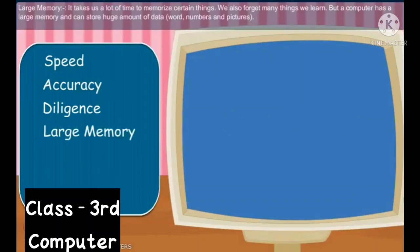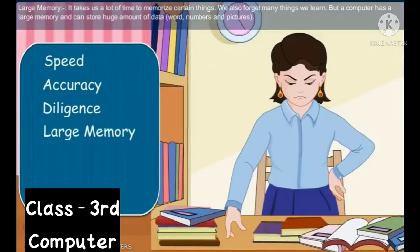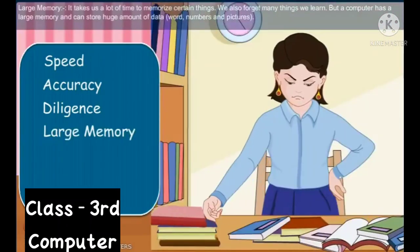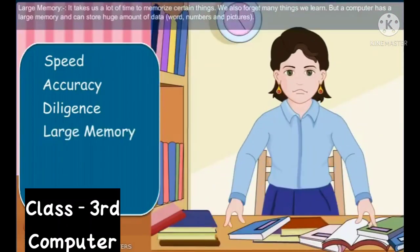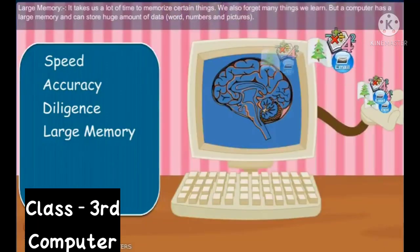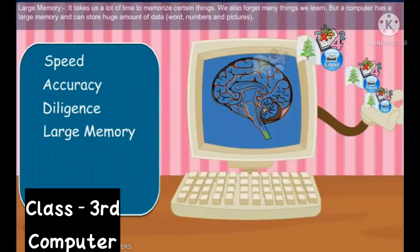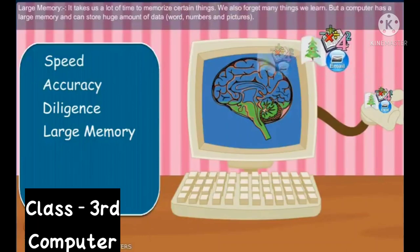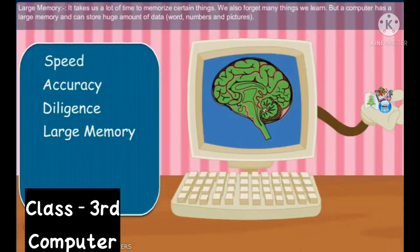The next characteristic is Large Memory. It takes us a lot of time to memorize certain things, and we also forget many things we learn. But a computer has a large memory and can store a huge amount of data — words, numbers, and pictures.